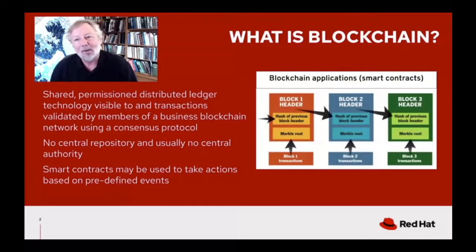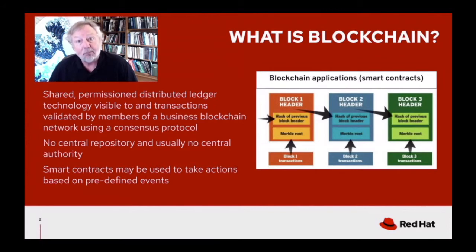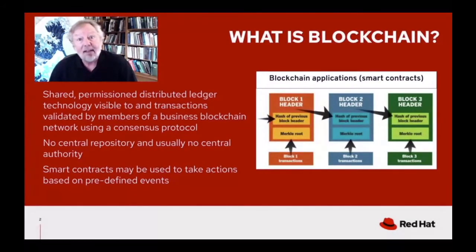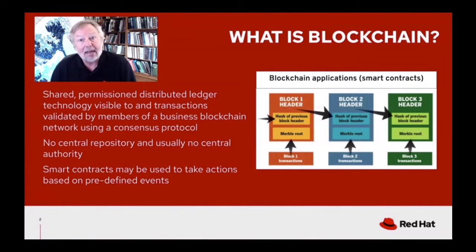Let me break that down. The distributed ledger is shared by members of the blockchain network, and those members are permissioned — this is not a public blockchain. You have business entities with some sort of trust relationship. Doesn't mean they trust each other 100%, but they have some level of trust. They participate together using a consensus protocol. You've probably heard about that in the context of Bitcoin, where proof of work is the consensus protocol, which is very energy intensive because it involves cryptographic mining.